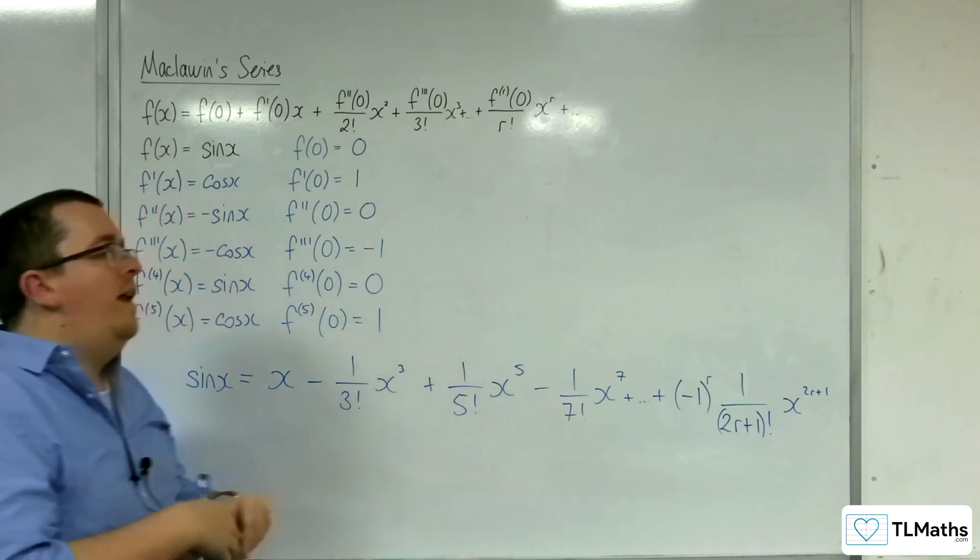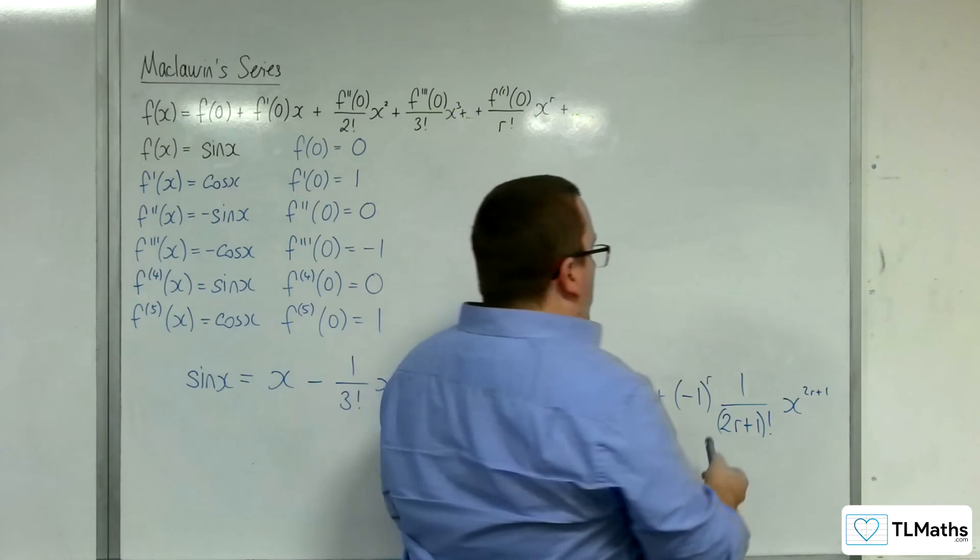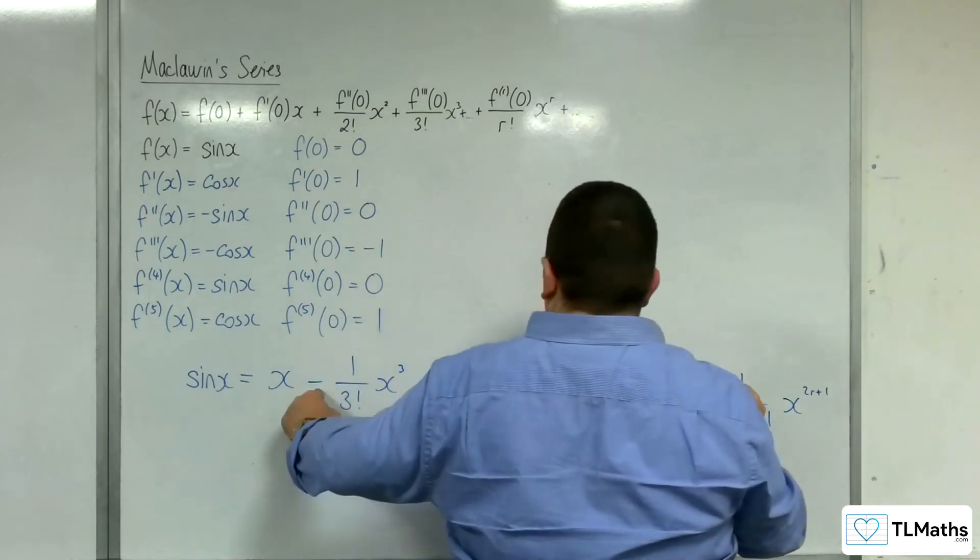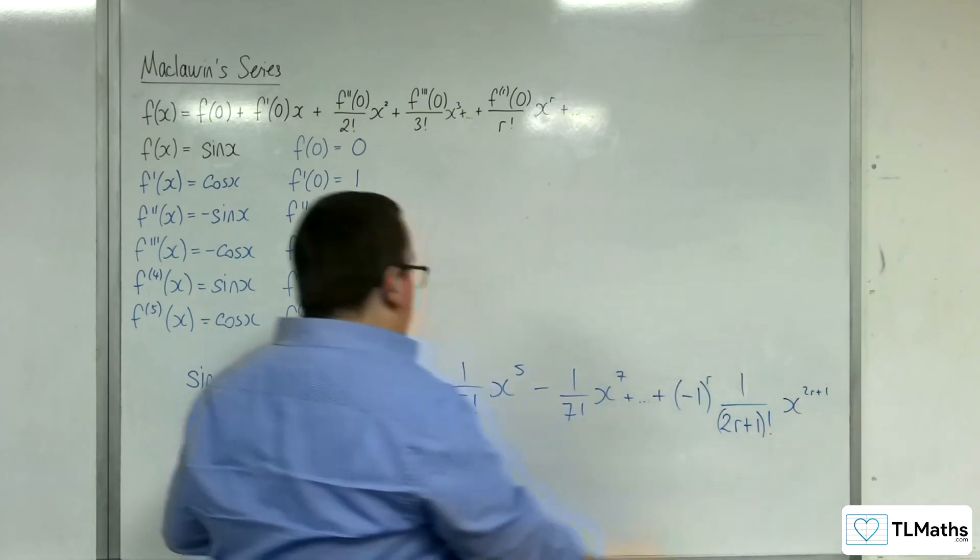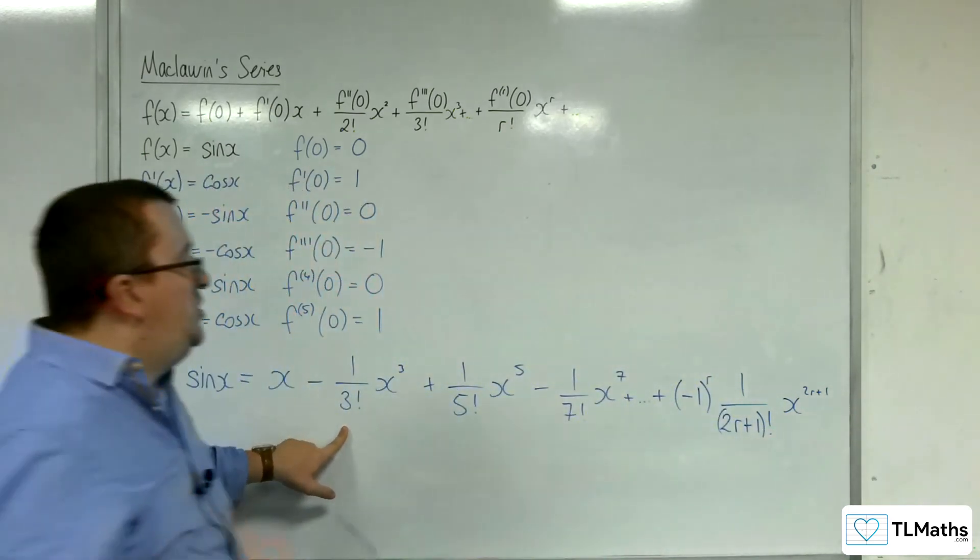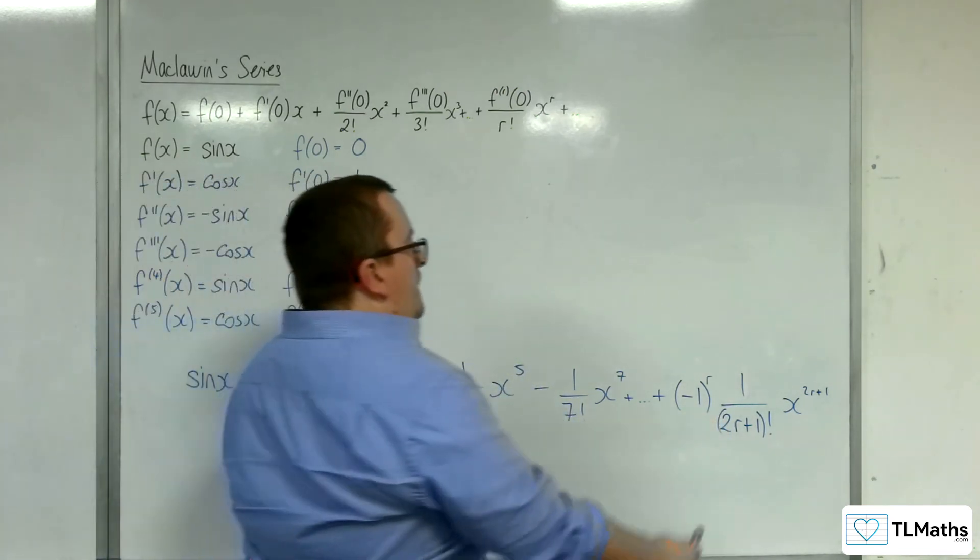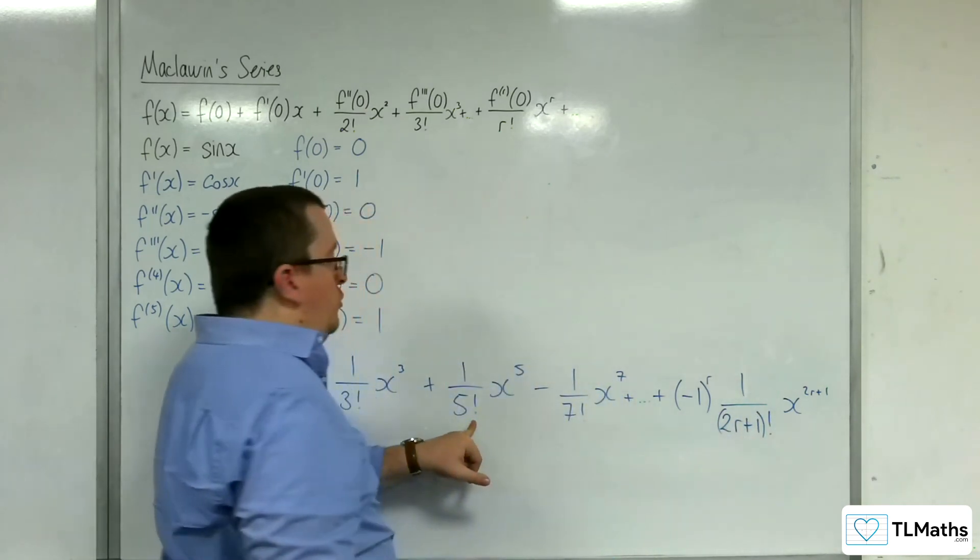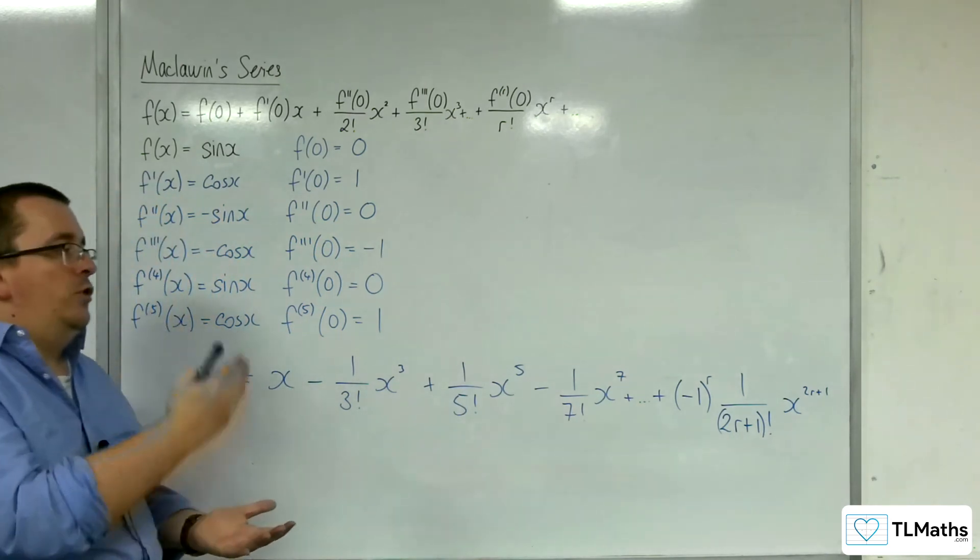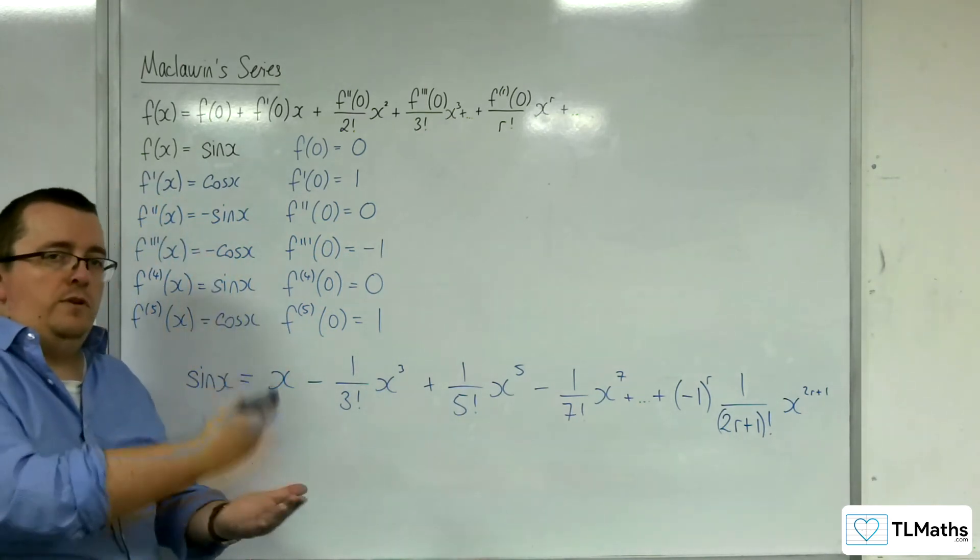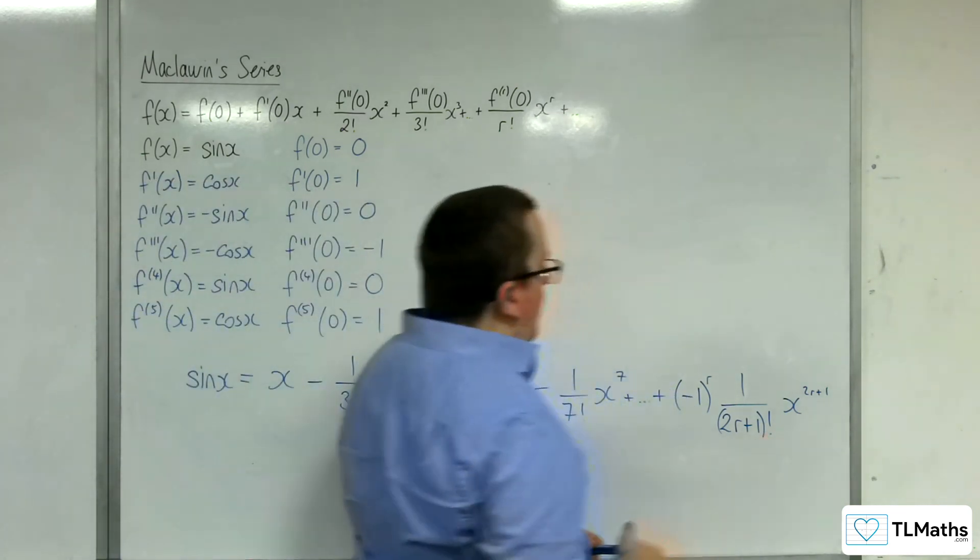Now let's try it. So when r is one, I'm going to get minus one to the power of one, which is the minus sign. One over three factorial x to the three. So when r is two, I'm going to get minus one squared, which is positive one, over one times one over five factorial, x to the five. And so as the r value is increasing from zero, one, two, three, four, five, it's giving me my terms in my sequence. So this is what I wanted.